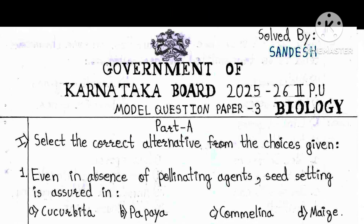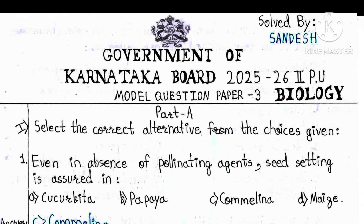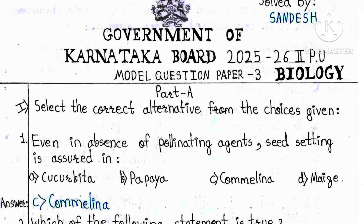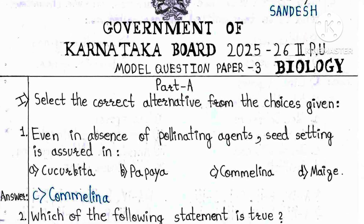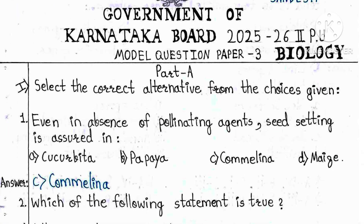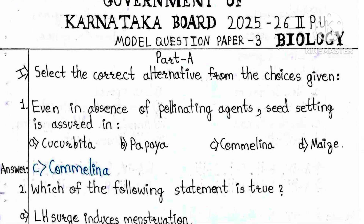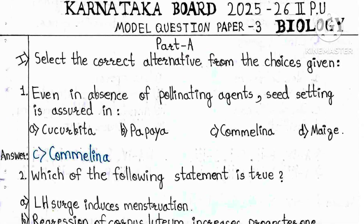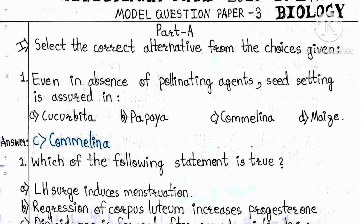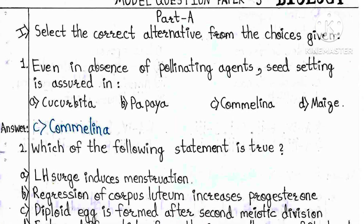Part A, Bit 1: Select the correct alternative from the choices given. Question 1: Even in the absence of pollinating agents, seed setting is assured in: A) Cucurbita, B) Papaya, C) Camelina, D) Maize. The answer is C — Camelina.